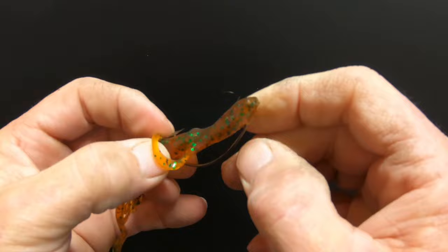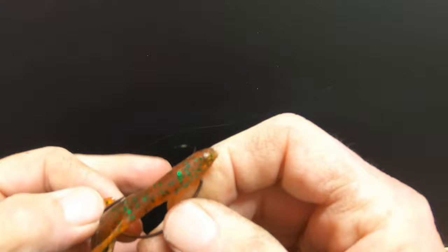Pull it back until it's straight. Like this. Now, you see the hook. This is semi-weedless.